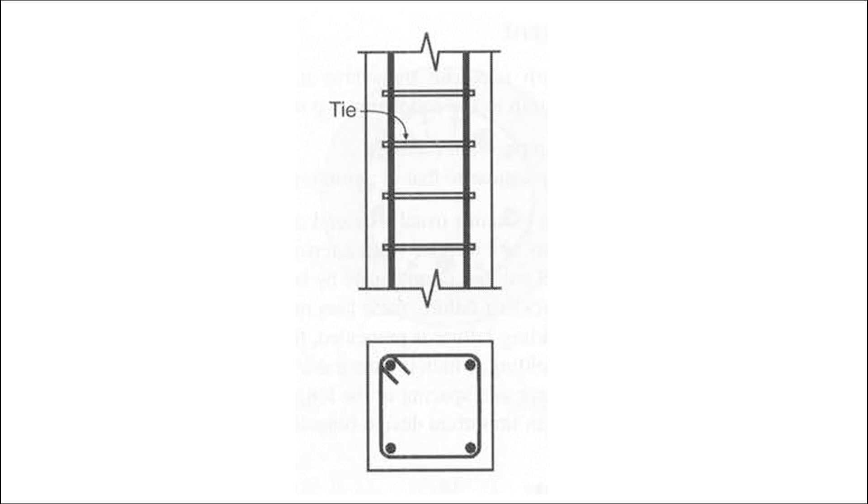The transverse reinforcement provides a number of benefits to a concrete column. It provides lateral restraint to the longitudinal bars under compression to prevent buckling. It increases the compressive strength and prevents sudden bursting of the concrete core, which is the confined portion. And it holds the longitudinal reinforcement in place while they're constructing the columns.